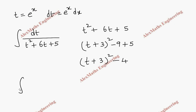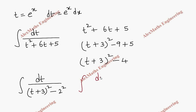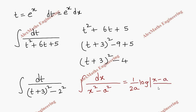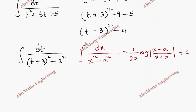Now further simplifying, this will be t plus 3 whole square minus 4. So when we write in the integration, integral dt by t plus 3 whole square minus 4. Now we have a formula: integral dx by x square minus a square, which is 1 by 2a log mod x minus a by x plus a plus c. So instead of x, we have t plus 3 and instead of a, we have 2.